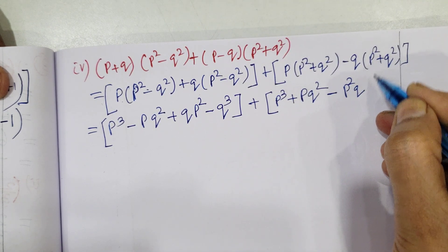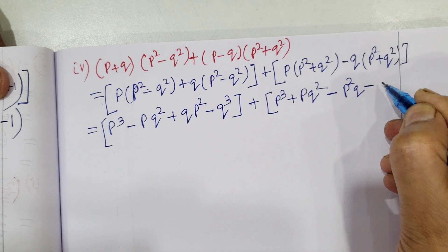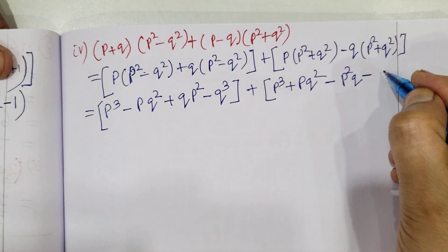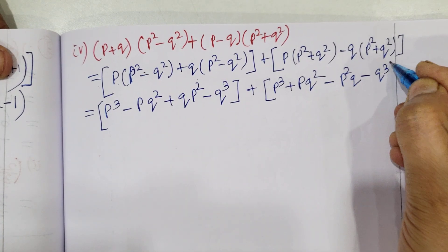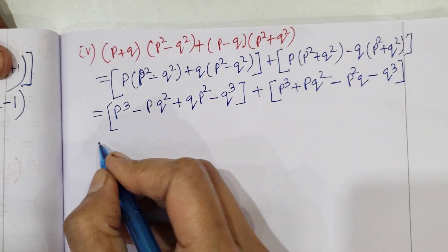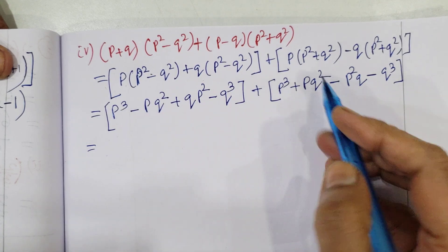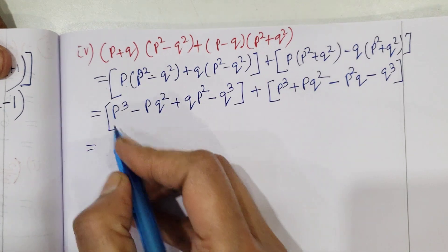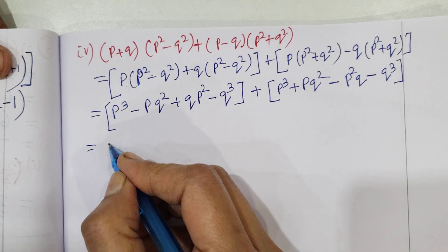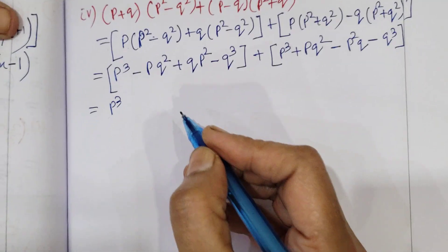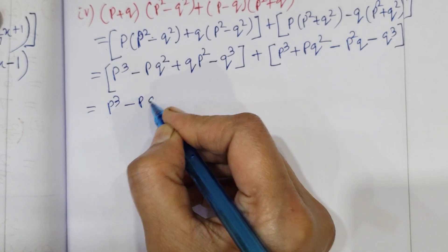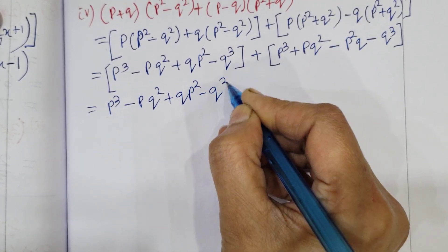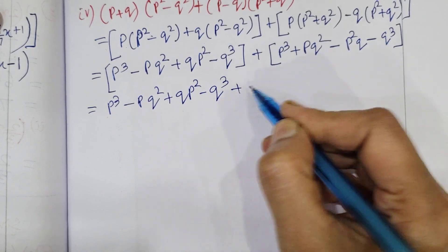Minus multiplied by plus gives minus, so minus Q into Q² becomes minus Q³. So we get P³ minus PQ² minus Q³. Opening the bracket: P³ minus P³ + QP² minus Q³ plus P³.